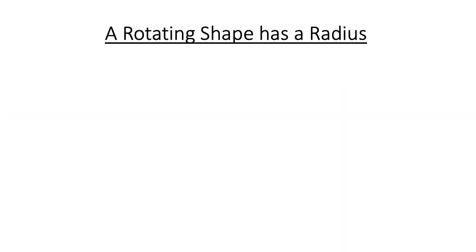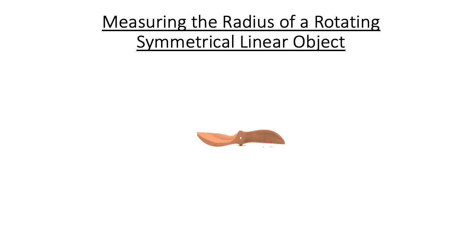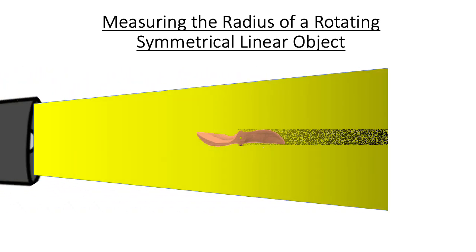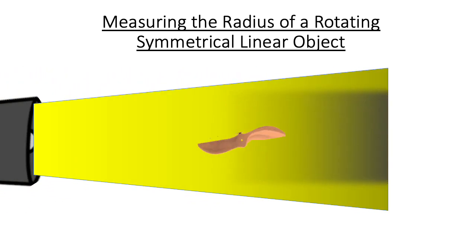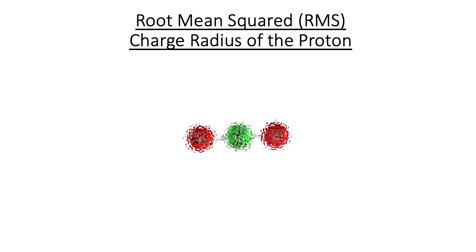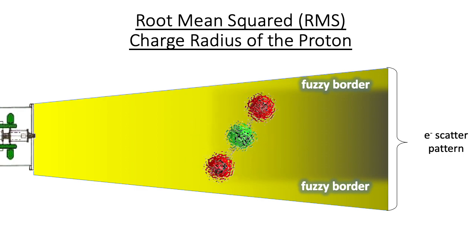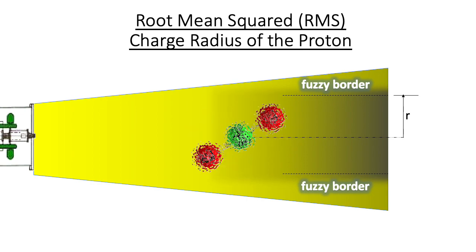Although we usually associate a radius with a circle or a sphere, a rotating shape also has a radius — in this case measured from the center of rotation to the tip of the propeller blade. Measuring the size of an irregular rotating object depends on the shape of the object and the manner of rotation. A stationary airplane propeller produces a smaller shadow at rest and a larger shadow when rotating. The three quarks of a proton are arranged in a linear alternating sequence, but exact quark positions are uncertain. Additionally, the proton is rotating in space, so the electron scatter pattern has fuzzy borders. Taking the root mean square of the electron charge density is a mathematical method of assigning an average value to this fuzzy border.